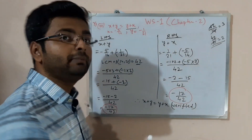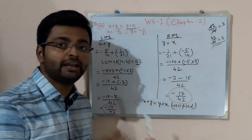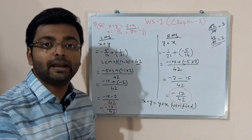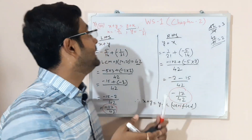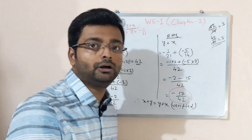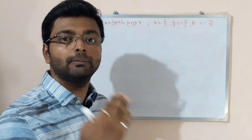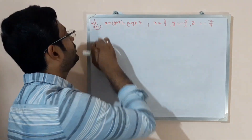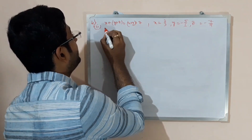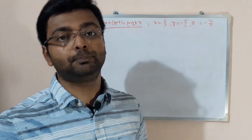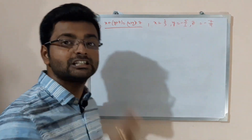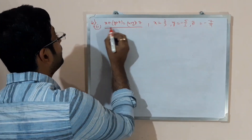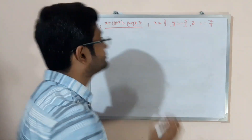This property we are verifying is called the Commutative Property — I have already explained this in my introduction video, you can check there. Now Question 4, Roman numeral 2: this property is called the Associative Property. I have already explained that in my introduction video as well. Now we are going to verify this.